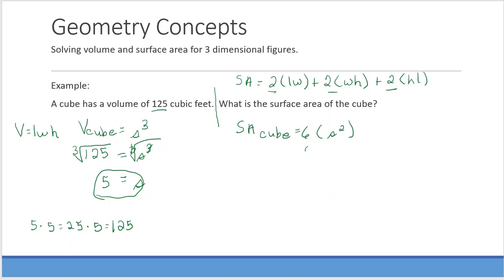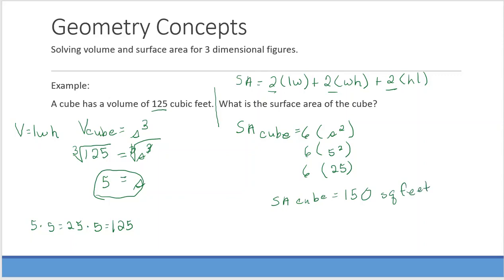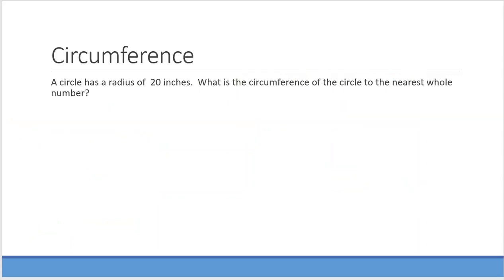I know one side is 5, so using substitution I have 6 times 5 squared. 5 squared is 25, so the surface area equals 6 times 25, which is 150. Because we're finding area, the answer is 150 square feet.